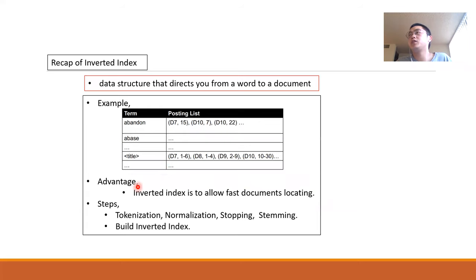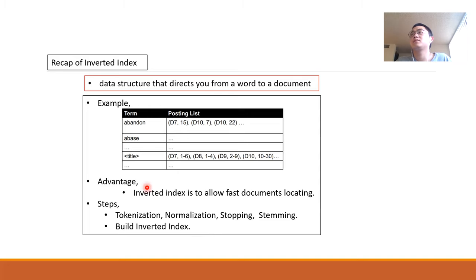The advantage of Inverted Index is to help you do faster document locating. In order to build the Inverted Index, we need to do tokenization, normalization, stopping, and stemming. And finally we can build an Inverted Index. It's just a recap for the course about Inverted Index and some pre-processing.